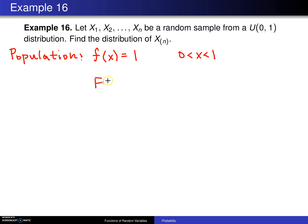Furthermore, the population distribution has a cumulative distribution function, capital F of x, which is 0 for x values less than or equal to 0, x for x values between 0 and 1, which is the support, and 1 for x values which are greater than or equal to 1.